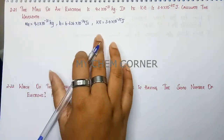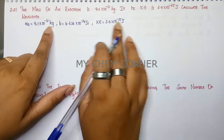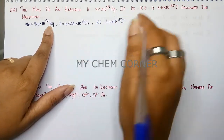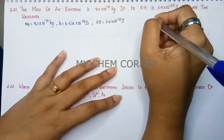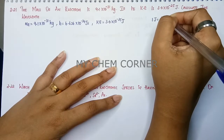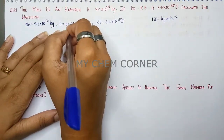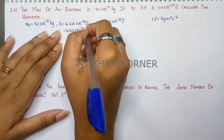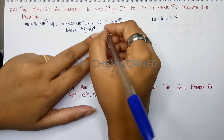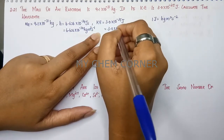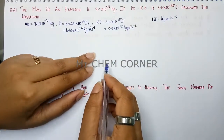To find the wavelength, we first need to calculate using kinetic energy. Before we do that, notice the parameters are not in the same units. Just like the previous problem, we convert joule to kg·m²·s⁻². One joule equals kg·m²·s⁻². So Planck's constant becomes 6.626 × 10⁻³⁴ kg·m²·s⁻¹, and kinetic energy becomes 3.0 × 10⁻²⁵ kg·m²·s⁻².